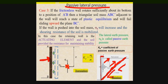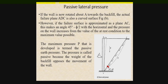Considering an element of soil at depth z, it is again subjected to vertical stress and horizontal stress. In passive conditions the vertical stress remains constant, but as the wall moves into the backfill sigma_h will increase. So sigma_h in the case of passive earth pressure is the major principal stress and sigma_v is the minor principal stress. The coefficient of pressure used in this state is Kp, and the angle subtended by the failure plane with the horizontal is 45 − φ/2.